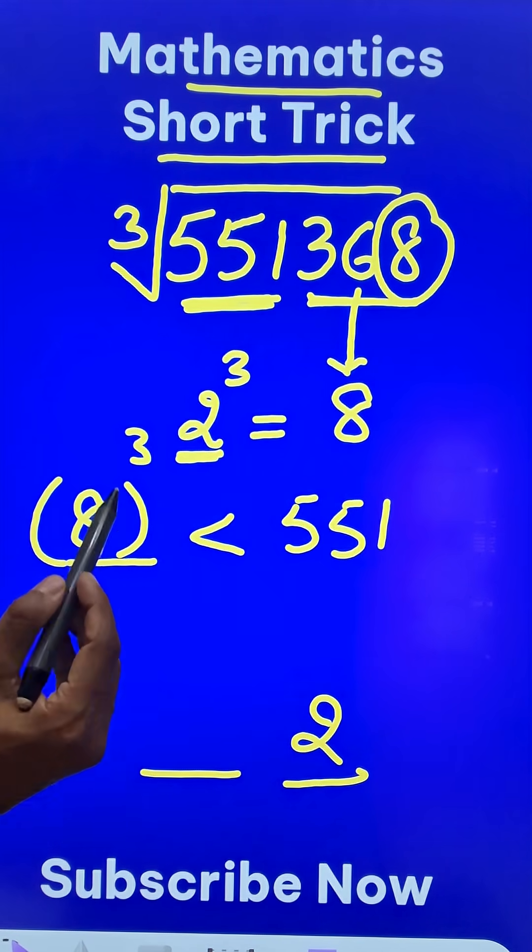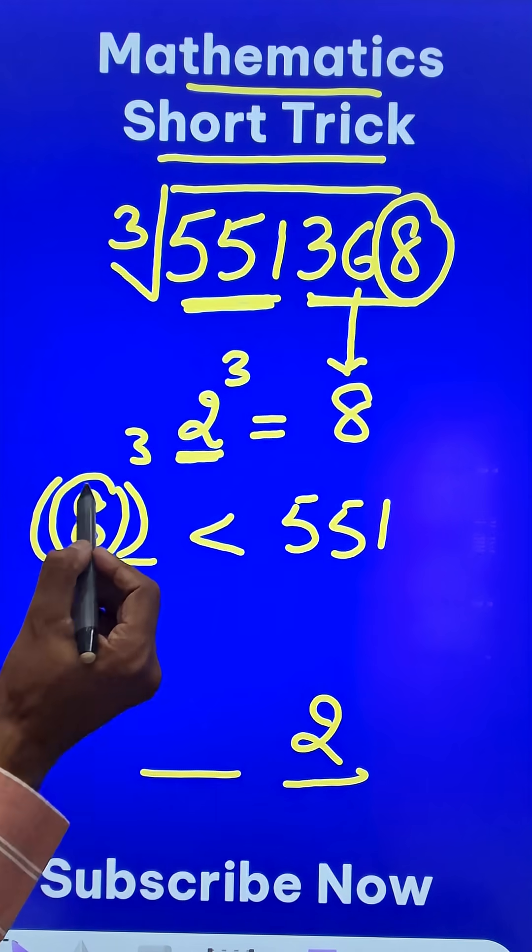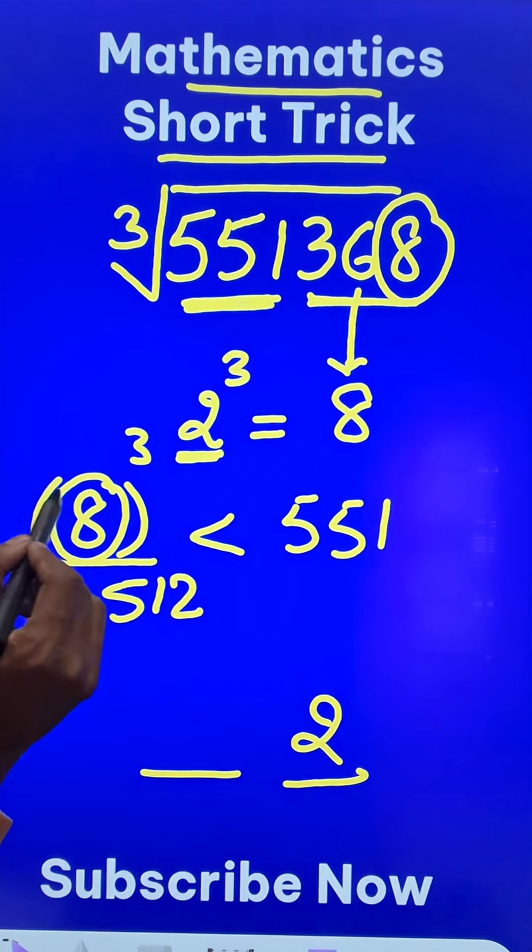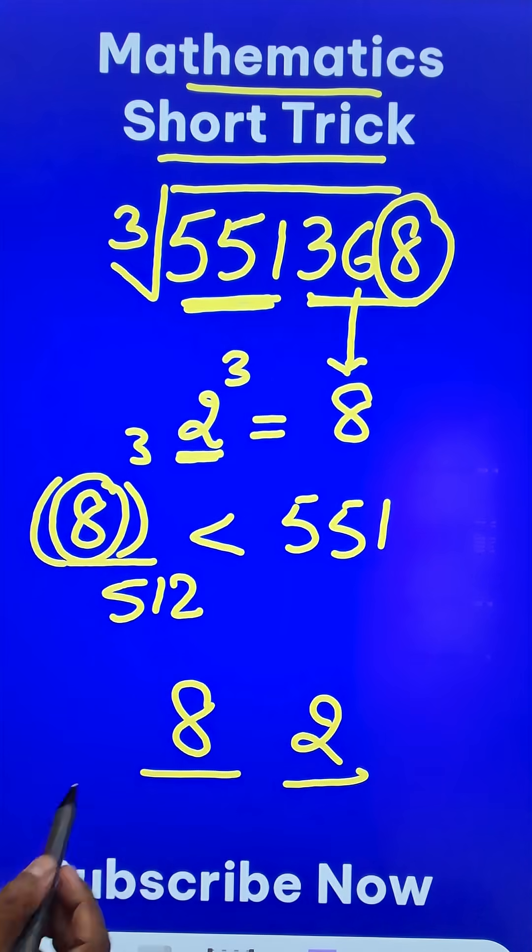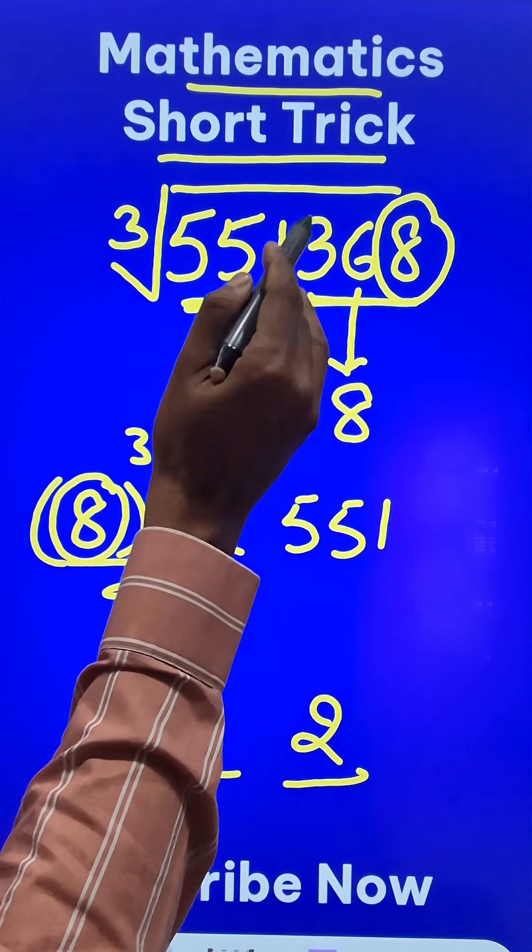So you need to know all the cubes of single digit numbers to get this answer, and because 8 cube is 512 which is less than 551, therefore this 8 forms the tenth digit of your answer. And now pick up the calculators and check: 82 times 82 times 82, is it 551368?